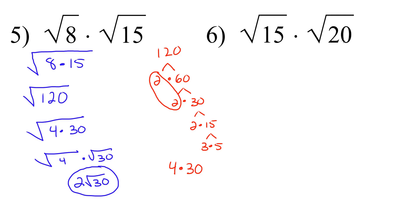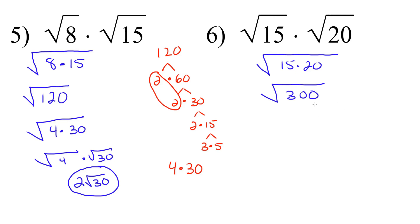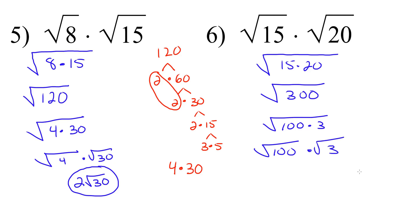Last one, number 6. We have radical 15 times radical 20. We're going to join them in the same radical: radical 15 times 20. And 15 times 20 is 300, so this becomes radical 300. What perfect square factor can we factor out of 300? 100. So 300 becomes 100 times 3. We have radical 100 times radical 3, and the square root of 100 is 10. So our answer is 10 radical 3.